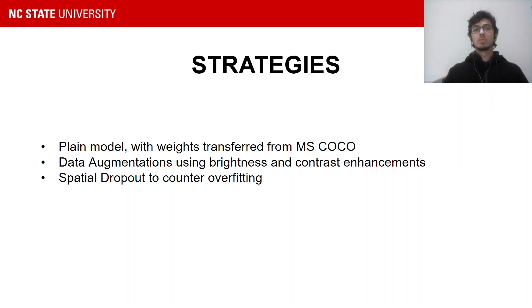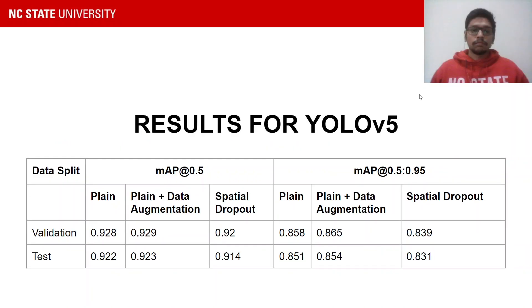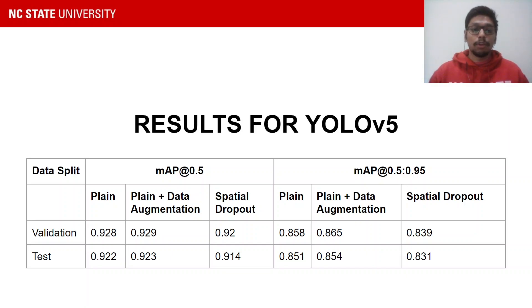We use three training strategies to train our models. First, we use the plain model with weights transferred from MS-COCO. Second, we use data augmentations using brightness and contrast enhancements. Third, we use spatial dropout to counter overfitting. The results table shows the performance of the three different models. The plain YOLO V5 fine-tuned model gives a MAP 0.5 score of 0.928 on the validation set and 0.922 on the test set. The YOLO V5 model with augmentation gives a MAP 0.5 score of 0.929 on validation and 0.923 on test. The YOLO V5 model with spatial dropout gives a MAP 0.5 score of 0.92 on validation and 0.914 on test.